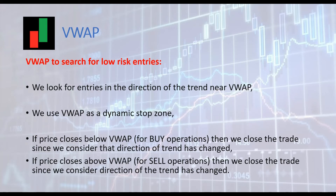VWAP can also be used to search for low risk entries. Since VWAP can be used as a dynamic stop loss zone, we can find low risk entries near VWAP. If we place a buy operation and price closes below VWAP, we would close the trade. If we place a sell operation and price closes above VWAP, we would close the trade. Let's see some examples.